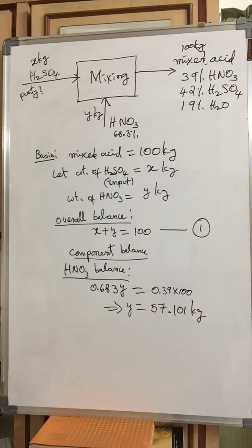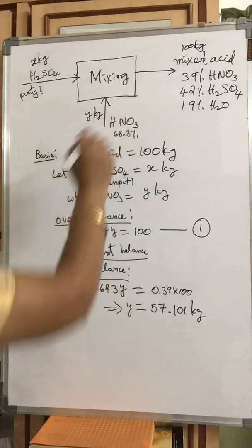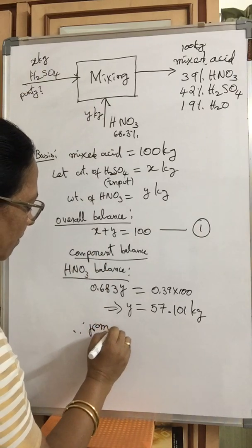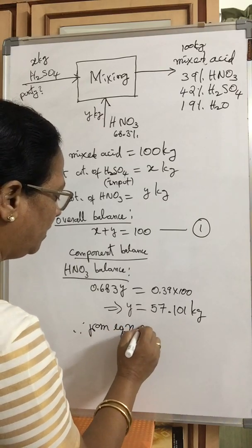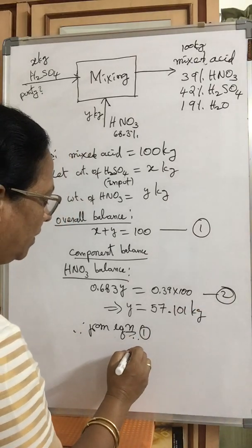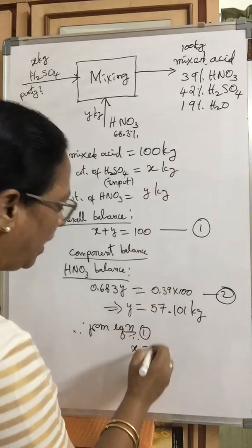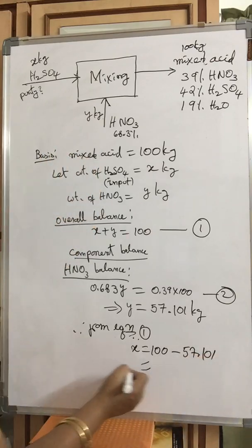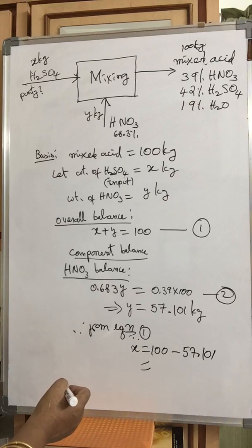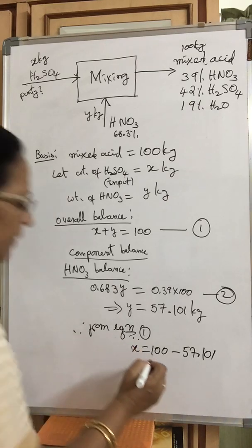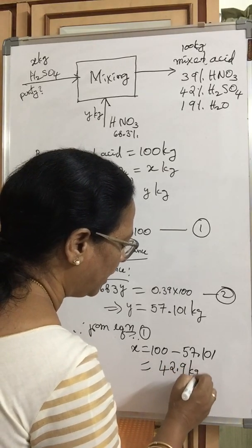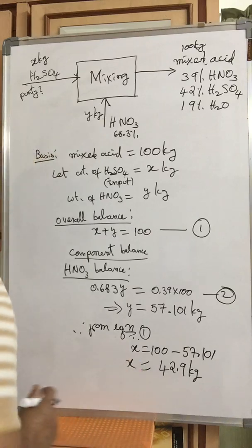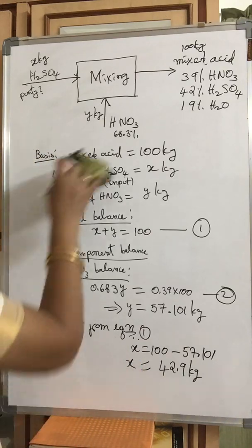Y is the weight of HNO₃ we obtained — Y = 57.101 kg. Then, for the weight of H₂SO₄, from Equation 1: X = 100 − 57.101 = 42.9 kg. So we have both X and Y: weight of sulfuric acid is 42.9 kg, and weight of HNO₃ is 57.101 kg.